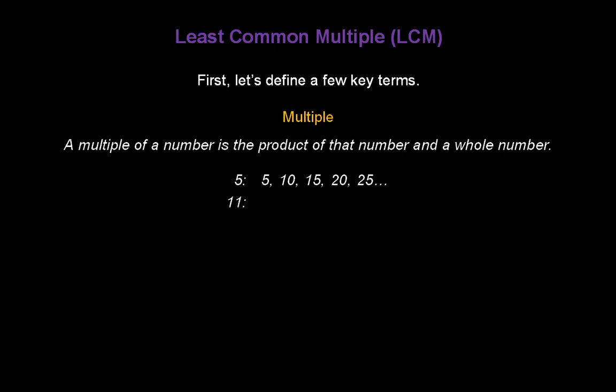If we wanted to find multiples of eleven, we could do the same thing. Eleven times one gives you eleven. Eleven times two, twenty-two. Eleven times three, thirty-three, and so forth. All of these numbers are multiples of eleven.